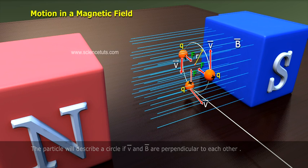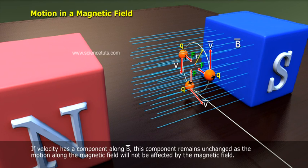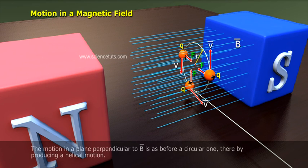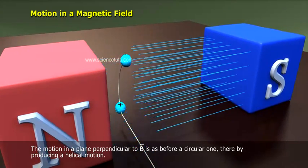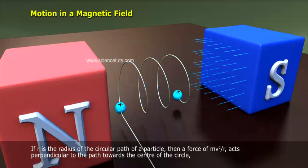If velocity has a component along B, this component remains unchanged as the motion along the magnetic field will not be affected by the magnetic field. The motion in a plane perpendicular to B is as before a circular one, thereby producing a helical motion.